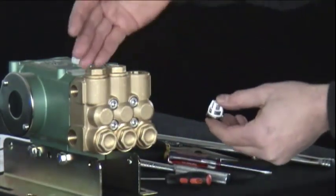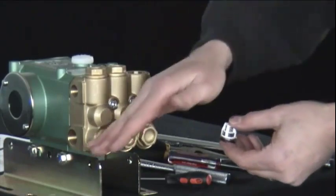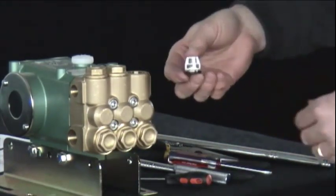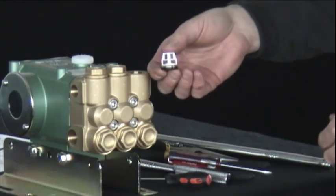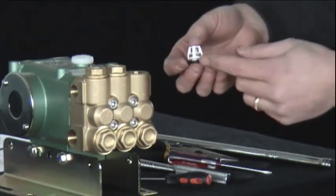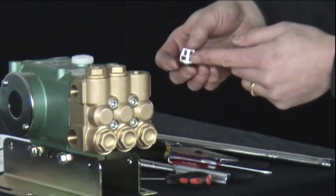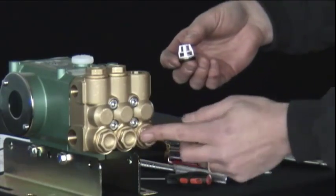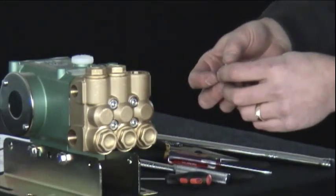Each pump consists of three discharge valves and three inlet valves. The inlet valves and discharge valves are the same. In one valve kit, you receive three valves. So if replacing both the discharge valves and the inlet valves, two valve kits will be required.